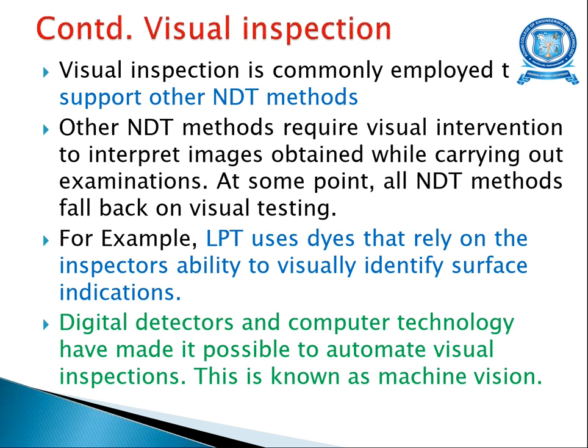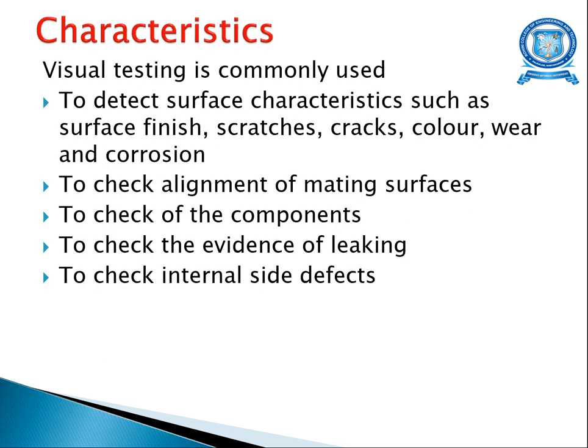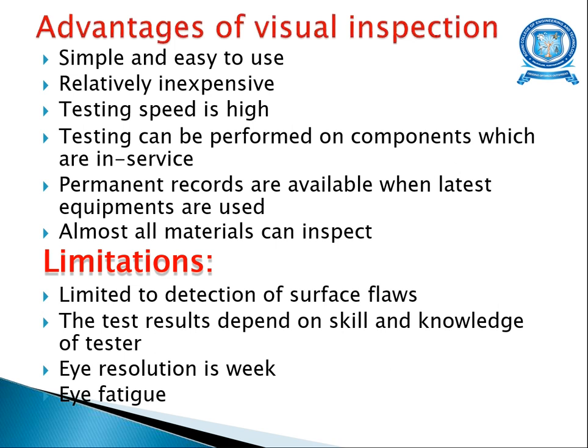Digital detectors and computer technology have made it possible to automate visual inspection — this is called machine vision. Characteristics of visual testing: it is commonly used to detect surface characteristics such as surface finish, scratches, cracks, color, wear, and corrosion; to check alignment of mating surfaces; to check evidence of leaking; and to check internal side defects.